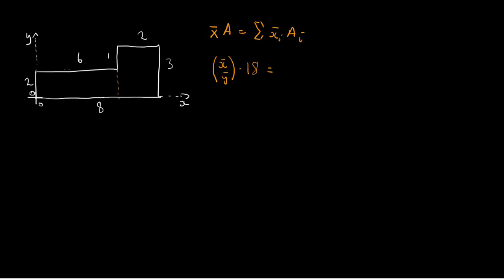For the element on the left, this shape has a line of symmetry passing through the centre, so the coordinate of the centroid will be in the centre — halfway along this side and halfway up this side. For the x-coordinate, we have halfway along the side of length 6, which is 3. For the y-coordinate, we have halfway up the side of length 2, which is 1. So that's the centroid (3, 1) for this elemental area, times its area, which is 12.